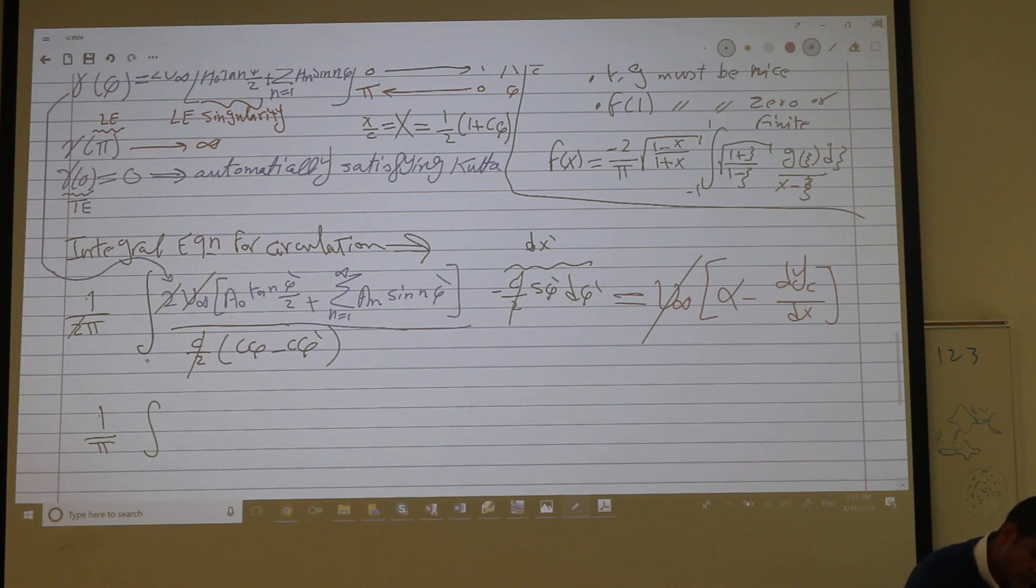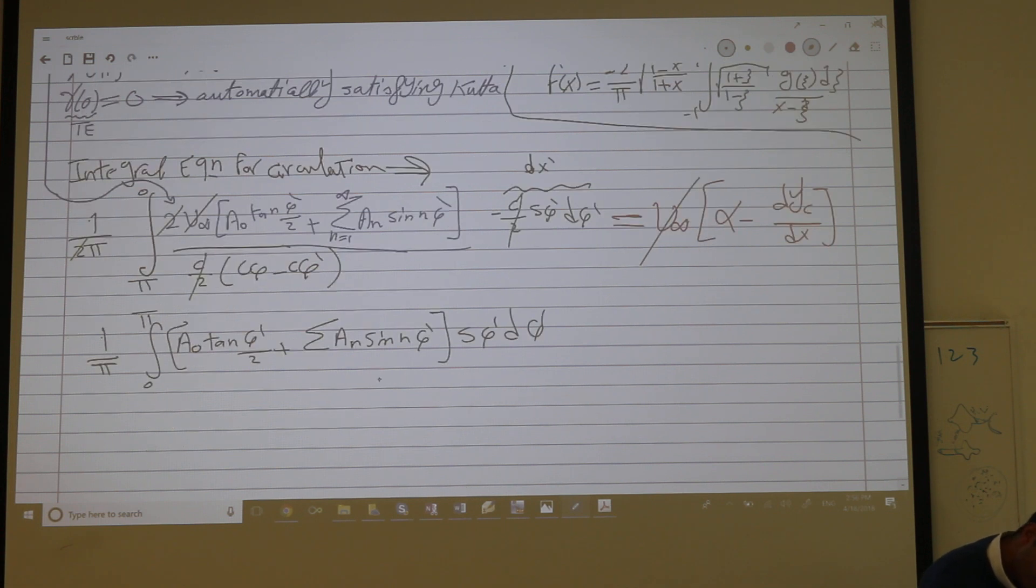So 0 in x means pi, c in x means 0, it's the other way around and this negative will make me just flip. A n sine n phi, sine phi d phi over cosine phi minus cosine phi prime equals alpha minus dy by dx.